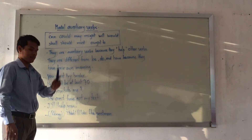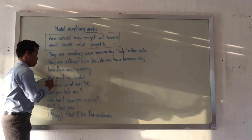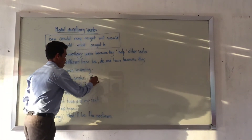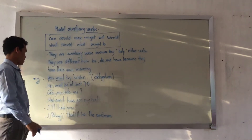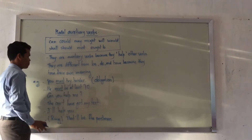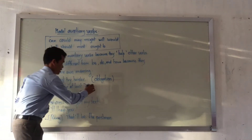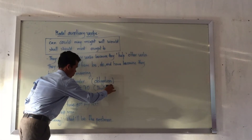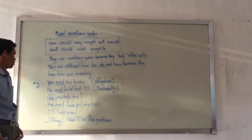For example: 'You must try harder.' Here the modal auxiliary verb is 'must,' and this sentence means obligation. Another sentence is 'He must be at least 70.' It uses the same word 'must,' but here 'must' refers to probability.